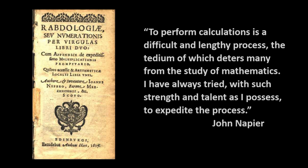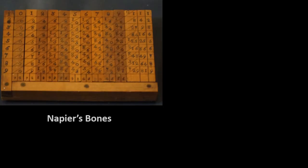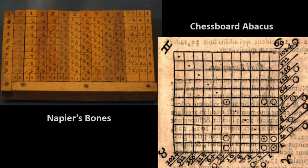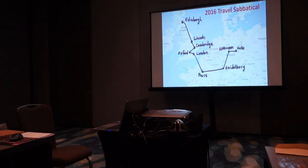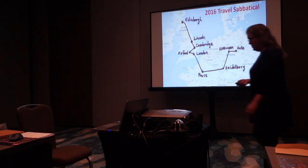A quote from the introduction to his book: 'To perform calculations is a difficult and unique process, the tedium of which deters many from the study of mathematics. I have always tried with such strength and talent as I possess to expedite the process' — and he certainly did. There are three devices talked about in this book; we will be looking at two of them. One is Napier's bones — that picture is of a set approximately 300 years old, which were very widely used over centuries — and then we'll also be looking at Napier's chessboard abacus.